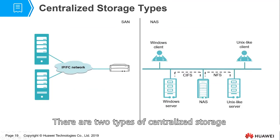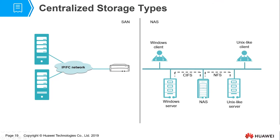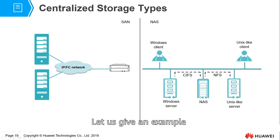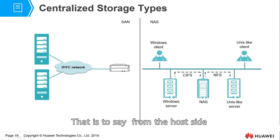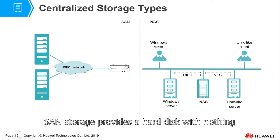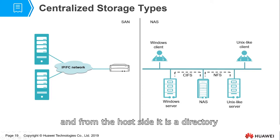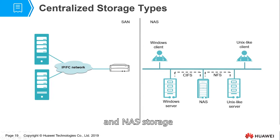There are two types of centralized storage: SAN storage and NAS storage. The difference between them is quite significant. SAN storage provides a bare device upwards — from the host side, SAN storage provides a raw hard disk. NAS storage has a file system, and from the host side, it appears as a directory. This is the big difference between SAN storage and NAS storage.